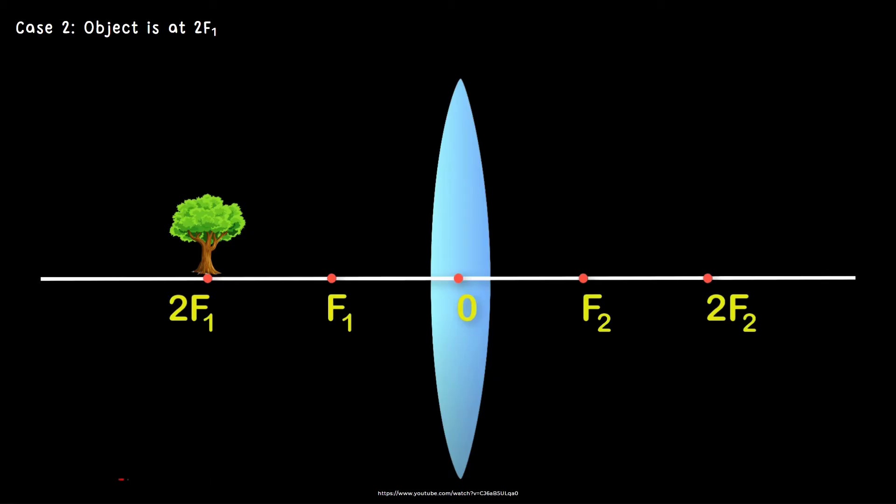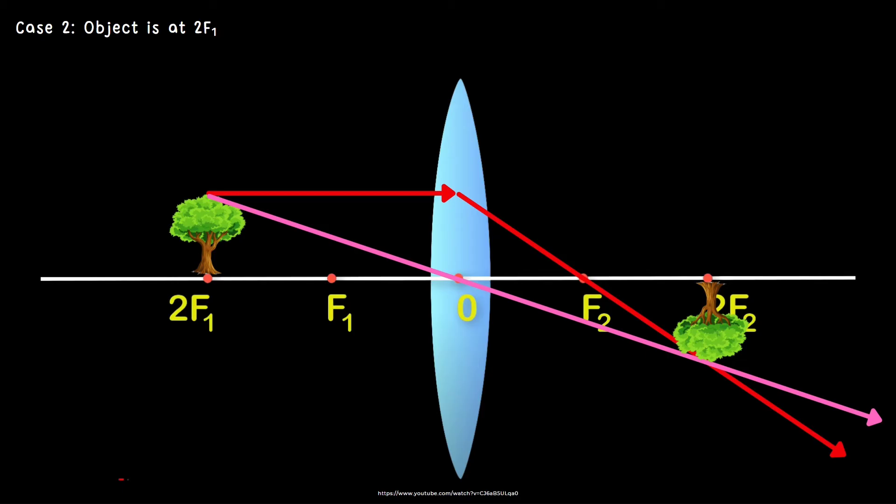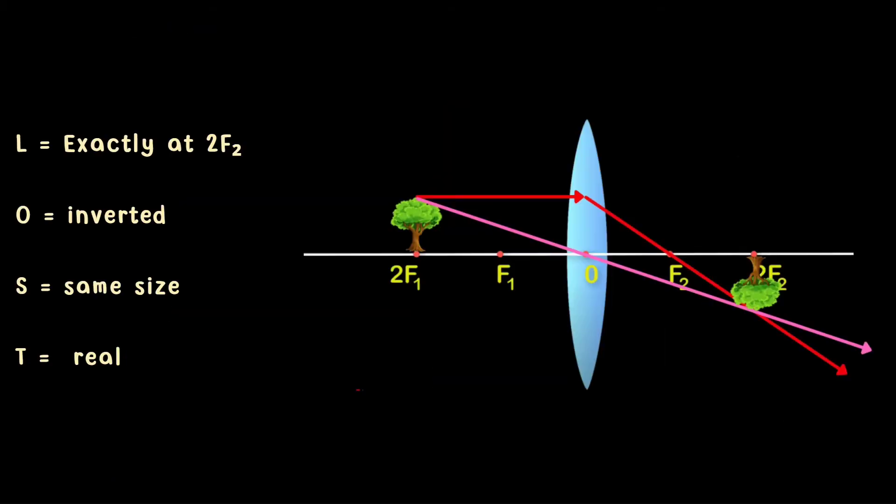Next is case number 2, when an object is at 2F1. Again, same steps, just two rules. Watch this carefully. The incident ray will pass through the focus, that is F2. Next is the second ray that passes through the optical center or the vertex. Where did the intersection happen? You can clearly see that the image formed opposite 2F2. The location of the image is at 2F2. The orientation is inverted. The size is the same. And the type of image is real since the image formed is inverted.